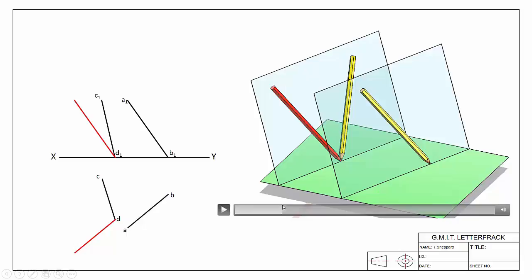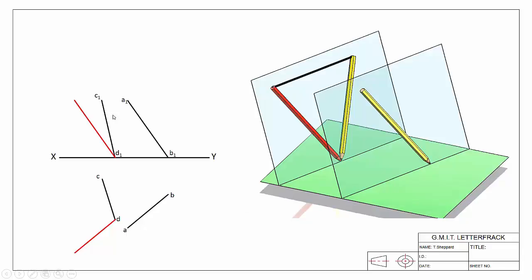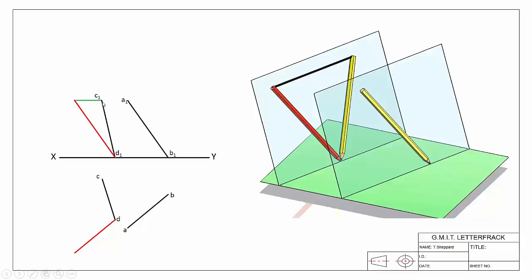This triangle represents a small portion of the overall plane. A level line in elevation simply looks like a line going straight across. We've used point D to attach our copied line, so we're going to use the other point on our line, which is C. There's our level line.